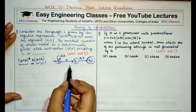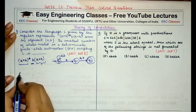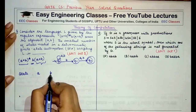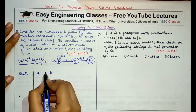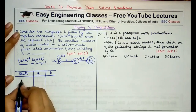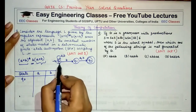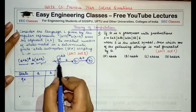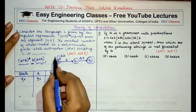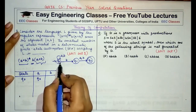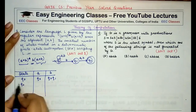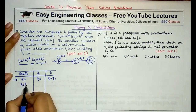Now to convert it into a DFA, I draw a table with the state and the transitions for a and b. Starting with state q0: on reading a, we go to q0 only. On reading b from q0, we go to q0 and q1. So the new state is {q0, q1} — this is the initial state.